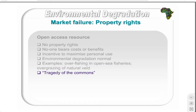A classic example is the tragedy of the commons. In this story, a group of shepherds would bring their sheep to graze at the commons — an open field of grassland. As no one owned the commons, some shepherds started bringing more sheep to graze. Others, seeing this, also had an incentive to add to their flocks, creating a cycle as each shepherd wanted to maximize use before someone else used more. Within a fairly short space of time, the commons was degraded and no one was able to use it any longer.